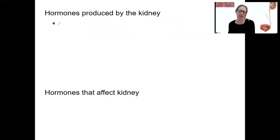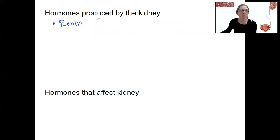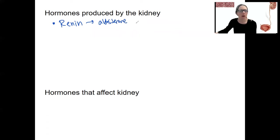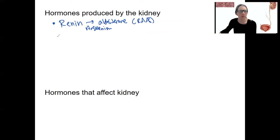What are some hormones produced by the kidney? Well, we've got renin — produced by the granular cells, which we've talked about already. This is going to stimulate aldosterone via angiotensin — our RAS system.